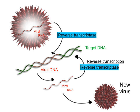Transcription proceeds in the following general steps. RNA polymerase, together with one or more general transcription factors, binds to promoter DNA. RNA polymerase creates a transcription bubble, which separates the two strands of the DNA helix by breaking the hydrogen bonds between complementary DNA nucleotides. RNA polymerase adds RNA nucleotides complementary to the nucleotides of one DNA strand. The RNA sugar-phosphate backbone forms with assistance from RNA polymerase to form an RNA strand. Hydrogen bonds of the RNA-DNA helix break, freeing the newly synthesized RNA strand.